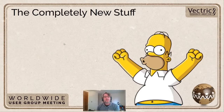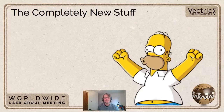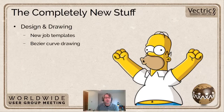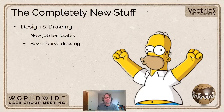Let's have a look at some of those things. This will be quite slide-light — I want to get on to showing you the features in action in the software as quickly as possible. On the completely new stuff in the drawing side, we're going to start by looking at templates — a completely new feature. We also have dynamic Bezier drawing, which is the ability to draw Beziers on the fly with your mouse, now much more straightforward.